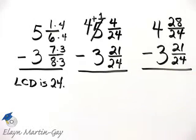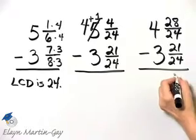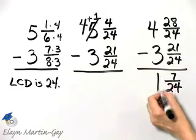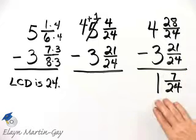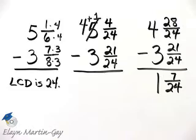And now I can actually subtract. 21 from 28 is 7 over 24, and 4 minus 3 is 1. Now this is a proper fraction, it is in simplest form, so this format is okay, and my difference is 1 and 7 over 24.